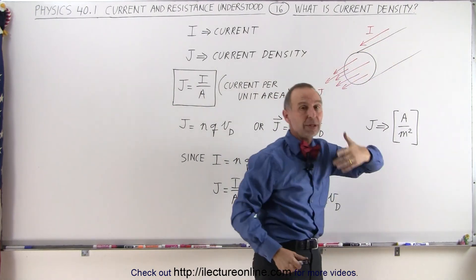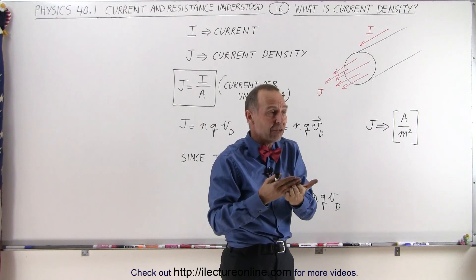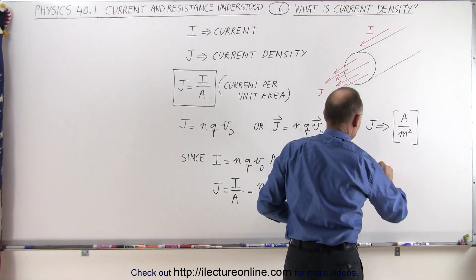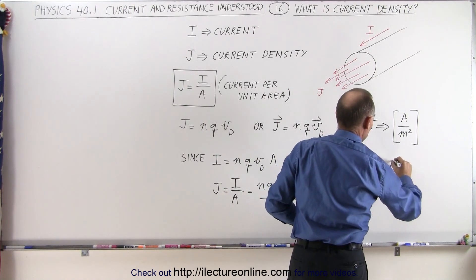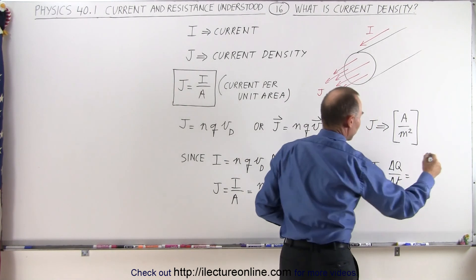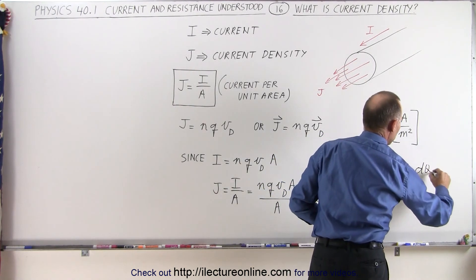We use the symbol I to indicate a current, and a current is defined as the amount of charge per unit time that passes by. So let's write that down. I is equal to the amount of charge per unit time, and as a differential, we can write this as dq/dt.